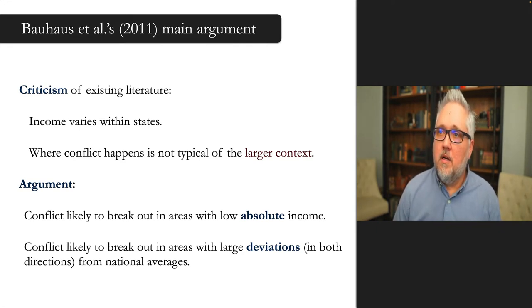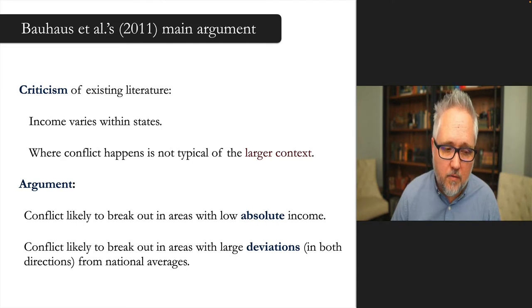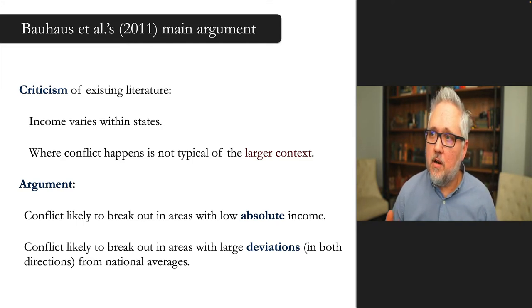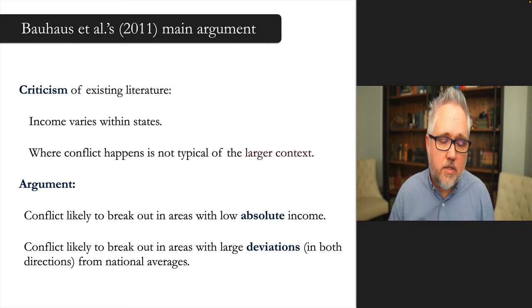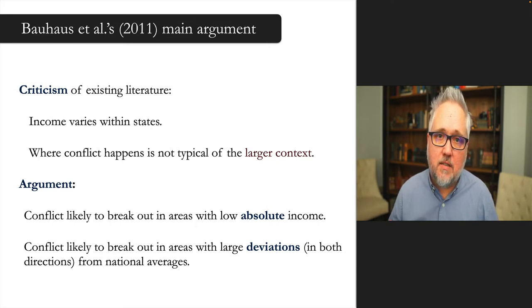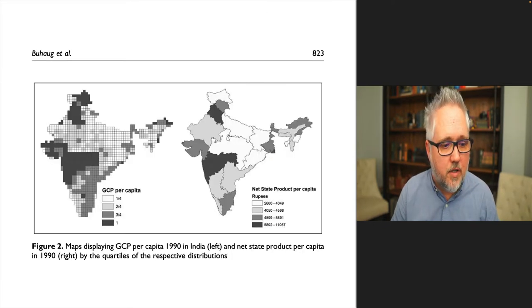They have hypotheses for both positive and negative deviations from the national average. You can make arguments for why parts of a country that are richer than the national average are more likely to see conflict, drawing on the Collier and Hoeffler rational choice model, but also grievance arguments for areas of low development relative to the national level. Relaxing the unitary state assumption helps us better understand why conflicts break out.